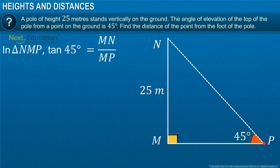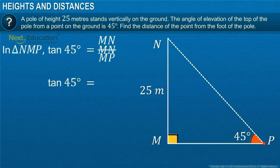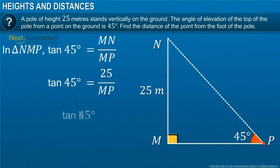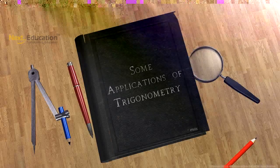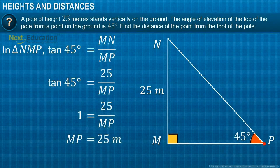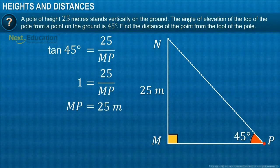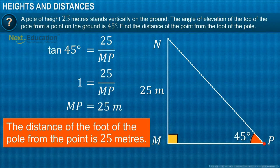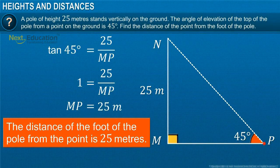Let's substitute the value of MN. MN is equal to 25 meters. The value of tan 45 degrees is equal to 1. Rearranging, we get the value of MP — that is, the distance of the foot of the pole from the point — is equal to 25 meters.